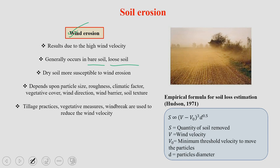The empirical formula for soil loss estimation by wind is: S = f(V, V₀, D), where S is the quantity of soil removed from a surface, V is wind velocity, V₀ is the minimum threshold velocity to move soil particles, and D is particle diameter. From this equation you can measure how much soil will be taken off from the surface under strong wind conditions.